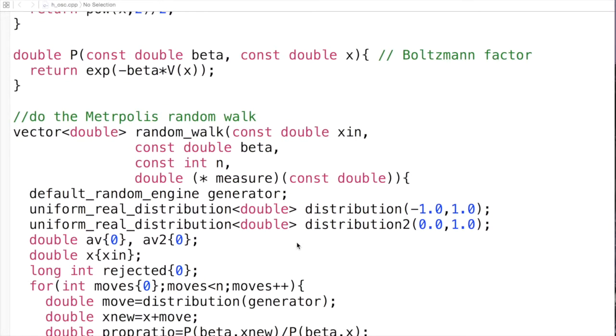Then the next thing we do is the Metropolis random walk, which takes four arguments: the starting point, the value of beta, and a function that defines our measurement. This complicated statement over here essentially defines measure to be that function.